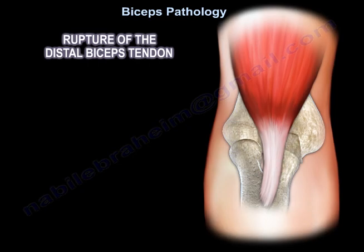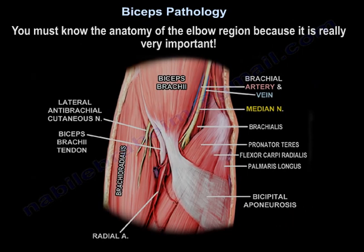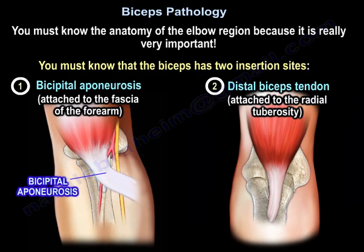Distal biceps tendon rupture. You must know the anatomy of the elbow region. The biceps has two insertion sites: the bicipital aponeurosis, which is attached to the fascia of the forearm, and the distal biceps tendon, which is attached to the radial tuberosity.